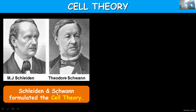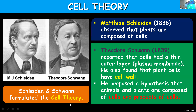Matthias Schleiden and Theodor Schwann, two German scientists, put forward the cell theory. In 1838, Schleiden observed that plants are made up of cells. In 1839, Schwann reported that cells have an outer boundary layer known as the plasma membrane, and that plant cells have an additional layer called cell wall. He proposed a hypothesis that animals and plants are made up of cells and products of cells. A third scientist, Rudolf Virchow, also contributed to the formation of cell theory.